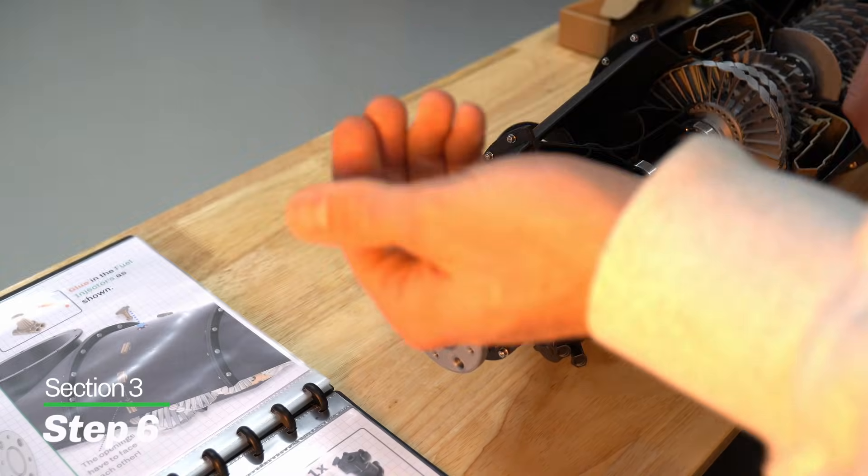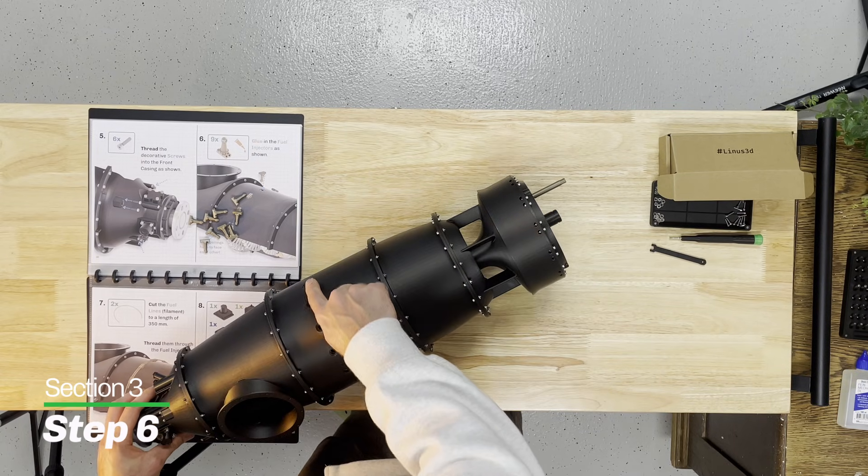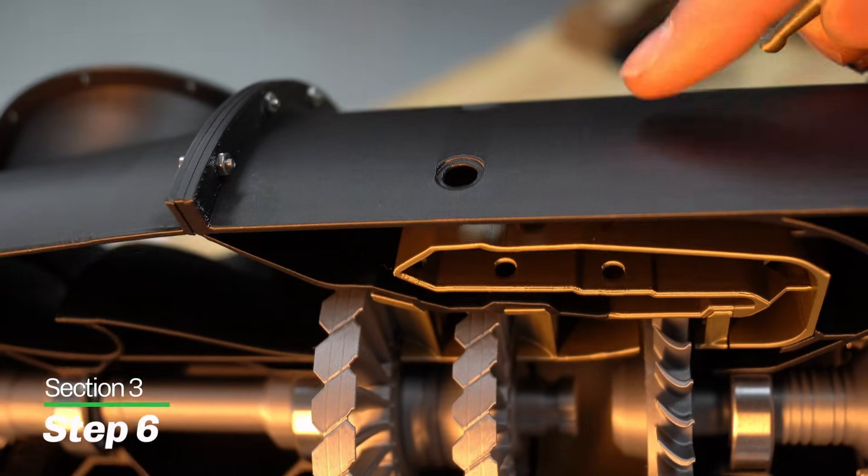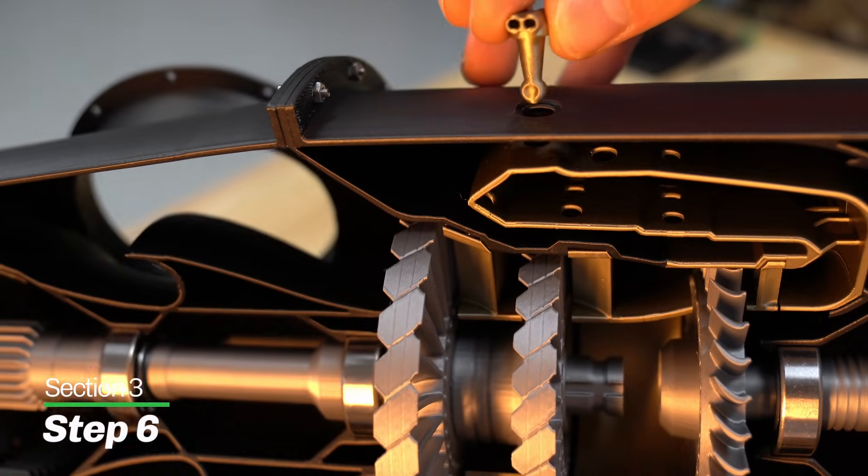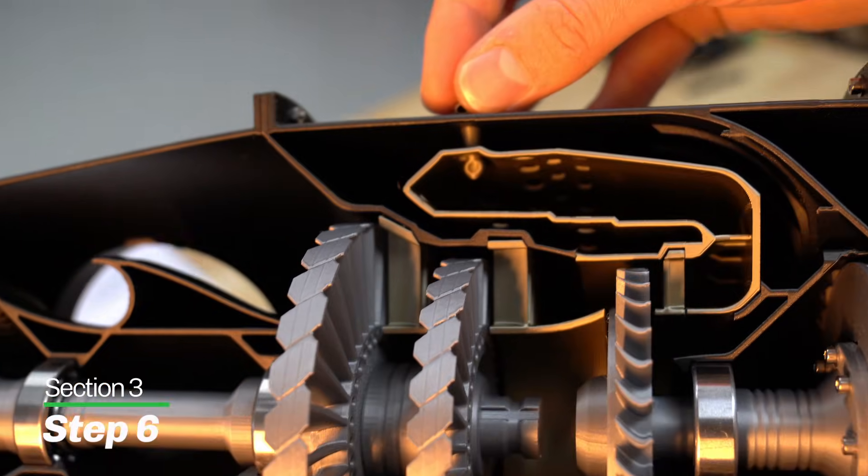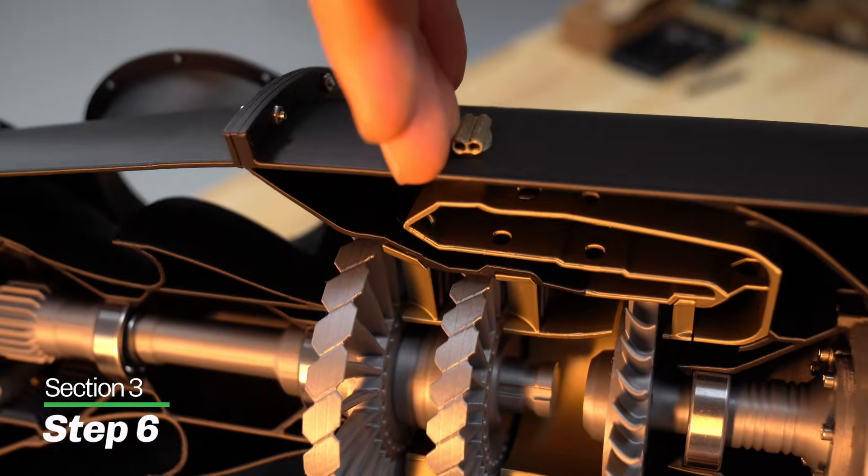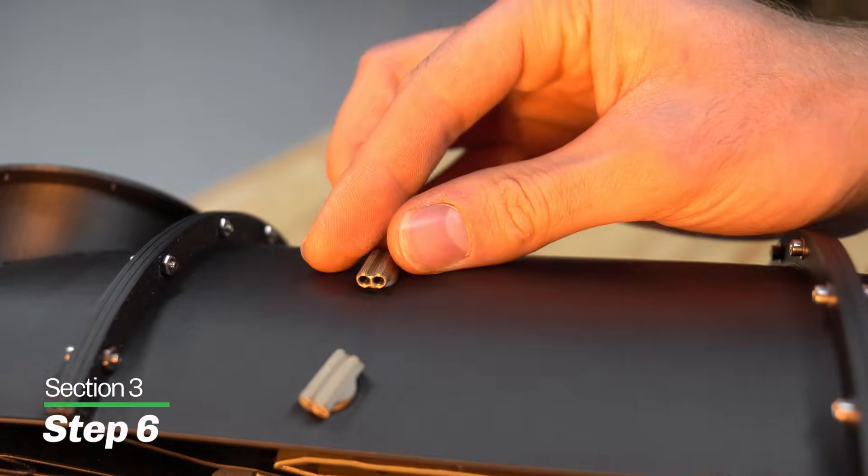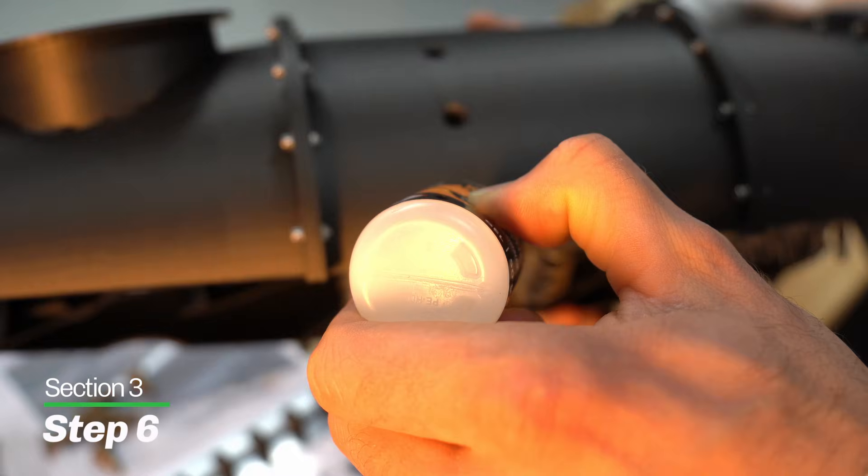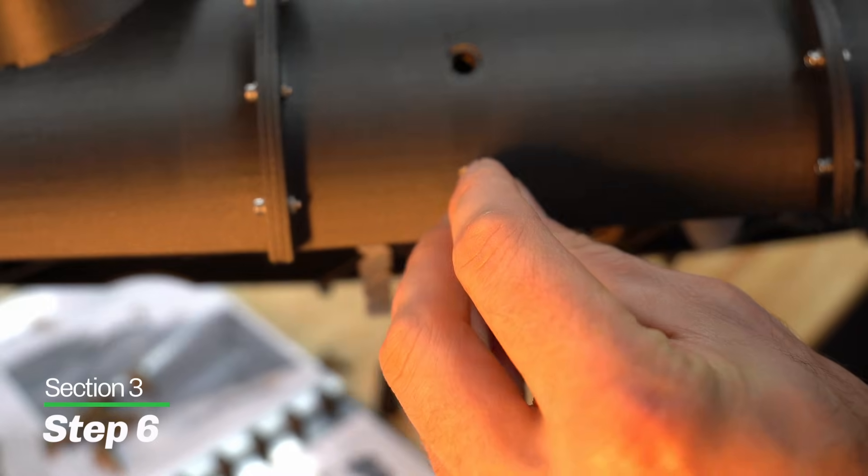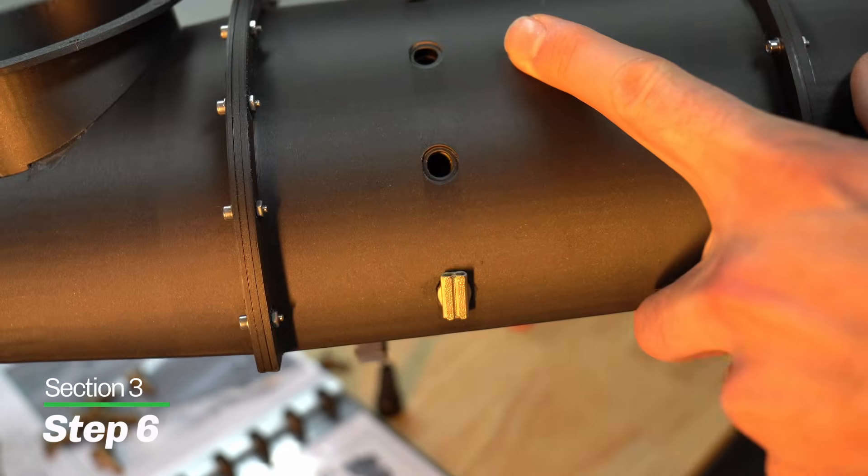Next step, step number six. We're going to grab our fuel injectors, all nine of them. We're going to flip the engine backside up again and focus on these holes right here. The fuel injector will go through the casing into the liner and poke out just like that. We're going to glue these in, and we want these facing each other perfectly. I'm going to add just a tiny bit of glue and push in the fuel injector. It should be facing the other holes. We're going to repeat that with the rest.